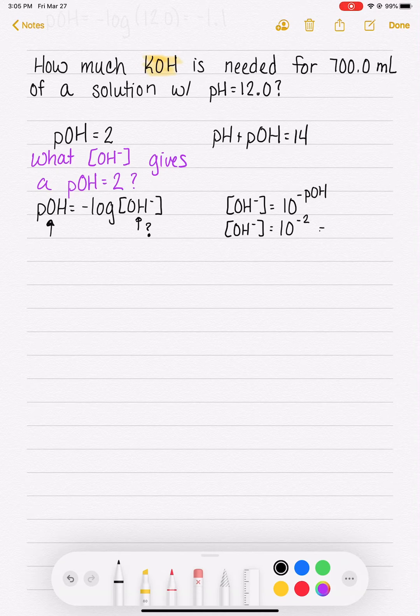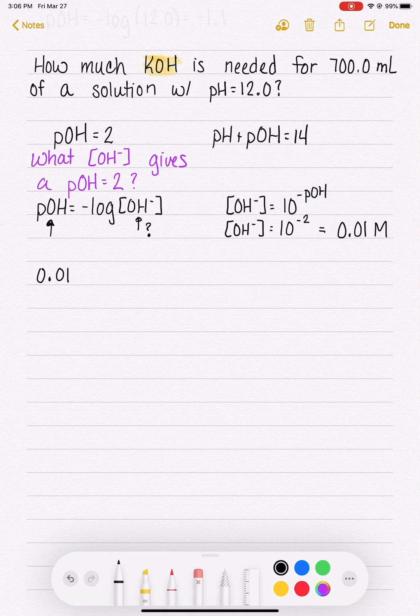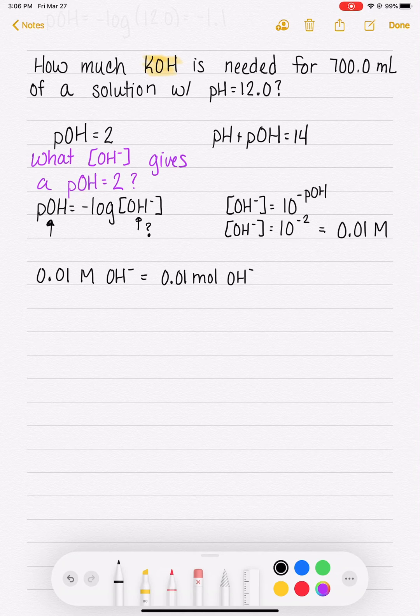And if we crunch the numbers on that, 10 to the negative 2, that is 0.01. So in order to get this solution with the right pH, it needs to be 0.01 molar with respect to OH minus. We need to have 0.01 molar OH minus, which is another way of saying 0.01 moles of OH minus per liter of solution.